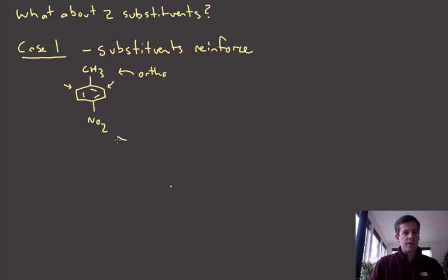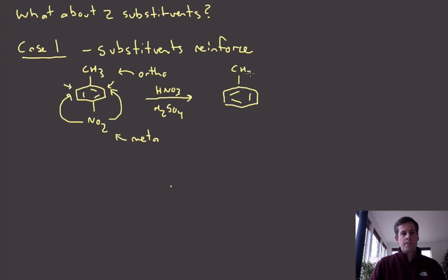Now the nitro group, on the other hand, is a strong meta director, but that's also to those same positions. So for example, if we were to try to nitrate this molecule, we would see very good, very high selectivity for that second nitro group to go next to the methyl group. Okay, so high regioselectivity.